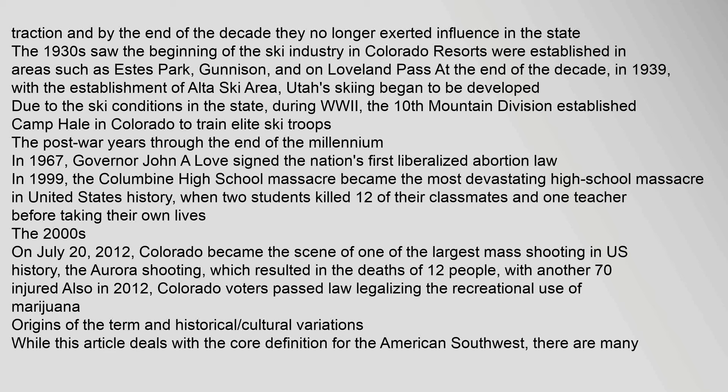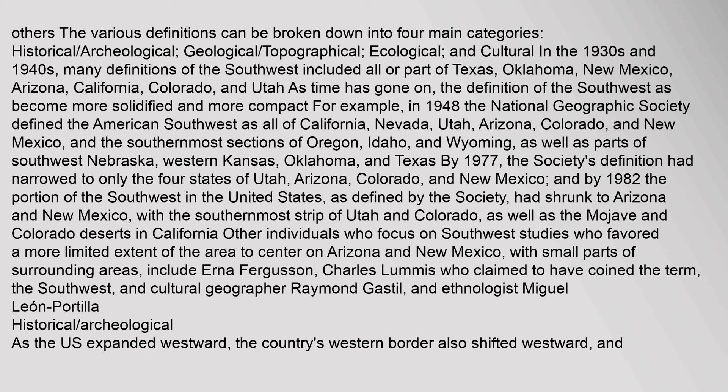While this article deals with the core definition for the American Southwest, there are many others. The various definitions can be broken down into four main categories: historical/archaeological, geological/topographical, ecological, and cultural. In the 1930s and 1940s, many definitions of the Southwest included all or part of Texas, Oklahoma, New Mexico, Arizona, California, Colorado, and Utah. As time has gone on, the definition of the Southwest has become more solidified and more compact. In 1948, the National Geographic Society defined the American Southwest as all of California, Nevada, Utah, Arizona, Colorado, and New Mexico, and the southernmost sections of Oregon, Idaho, and Wyoming, as well as parts of southwest Nebraska, western Kansas, Oklahoma, and Texas. By 1977, the Society's definition had narrowed to only the four states of Utah, Arizona, Colorado, and New Mexico. By 1982, the portion of the Southwest in the United States had shrunk to Arizona and New Mexico, with the southernmost strip of Utah and Colorado, as well as the Mojave and Colorado deserts in California.